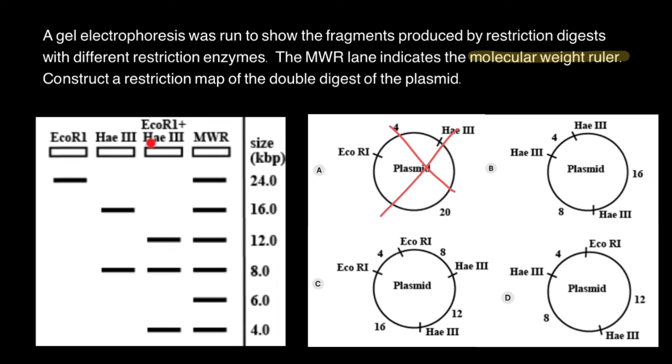with double digest, we expect that one cut would be by EcoRI. And we see here that all three cuts are made by one restriction enzyme. So we also cross out this variant.